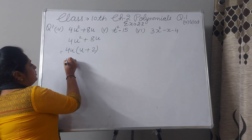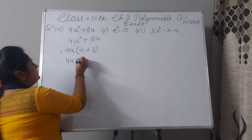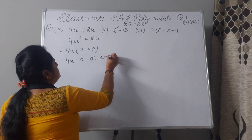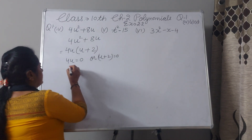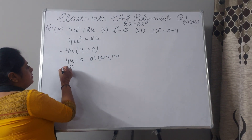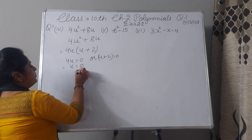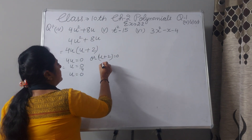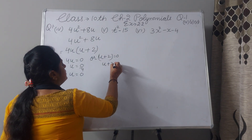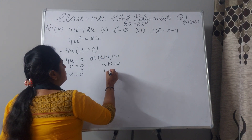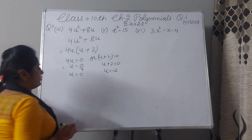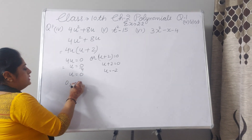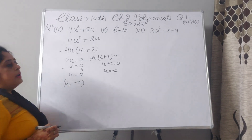These are two zeros of this polynomial. To make this whole polynomial 0, either 4u equal to 0 or u plus 2 equal to 0. If we solve this, u equal to 0 by 4, u equal to 0. And u plus 2 equal to 0, u equal to minus 2. So there are two zeros: one is 0 and one is minus 2.